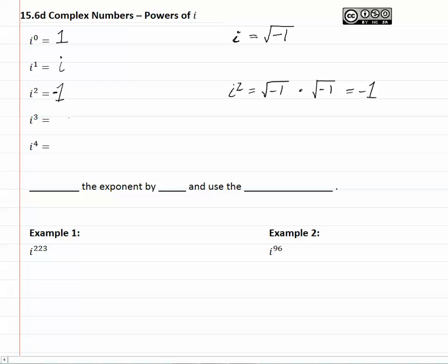i to the third is negative i, and i to the fourth is 1 again. Notice that if you multiply i squared to itself, that would be equal to negative 1 times negative 1, which is indeed positive 1. Notice that i to the 0 and i to the fourth, their resultants match.